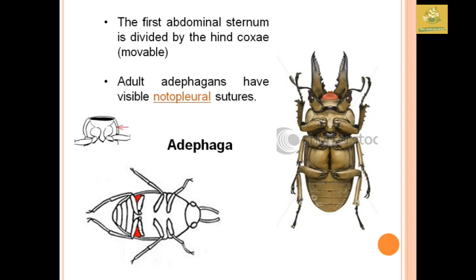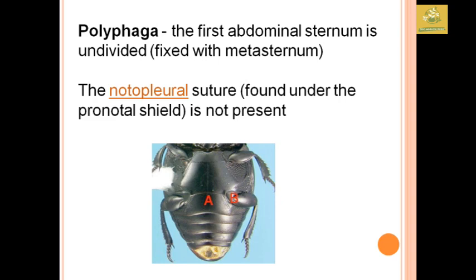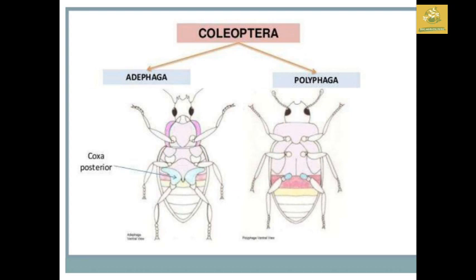In Adephaga, the first abdominal sternum is divided by the movable hind coxa, and adult Adephaga have a visible notopleural suture. In Polyphaga, the first abdominal sternum is undivided and fixed with the metasternum, and the notopleural suture found beneath the pronotum sheet is not present. The coxa posterior is present in Adephaga.